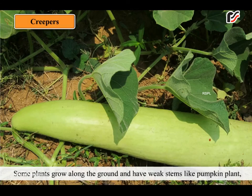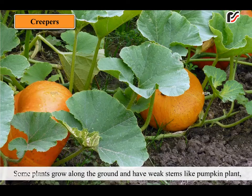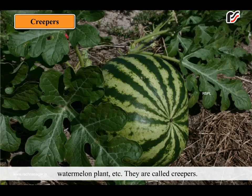Some plants grow along the ground and have weak stems, like pumpkin plant, watermelon plant etc. They are called creepers.